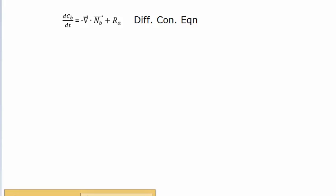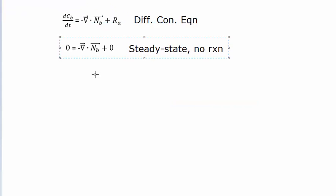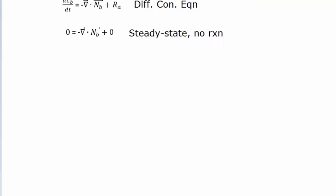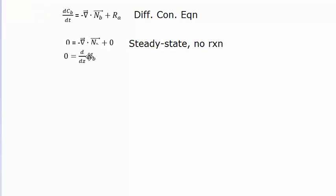We're going to make the similar assumptions we make pretty much every single time. First, we're going to assume it's steady state, so the time-derivative term will go to zero. Then we're going to assume there's no reaction — the benzene is not going to be reacting with the air or reacting with itself.